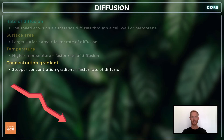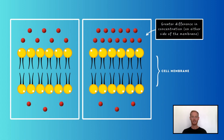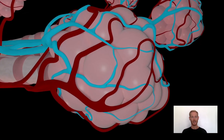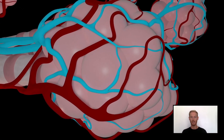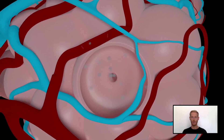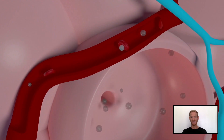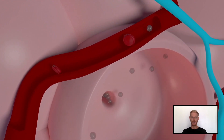Number three: steeper concentration gradients result in faster rates of diffusion. In other words, the greater the difference in concentration of a substance on either side of a membrane, the faster it will diffuse across it. Number four: greater diffusion distances result in slower rates of diffusion. For example, in the lungs, both the alveoli and the capillaries that surround them are only one cell thick. This reduces diffusion distance and speeds up the rate of gaseous exchange.